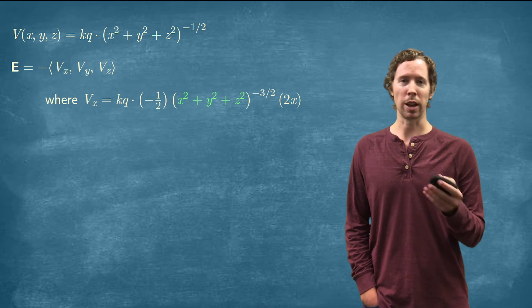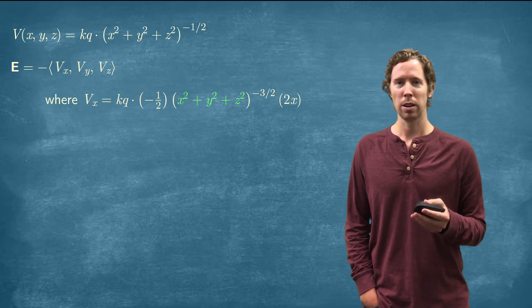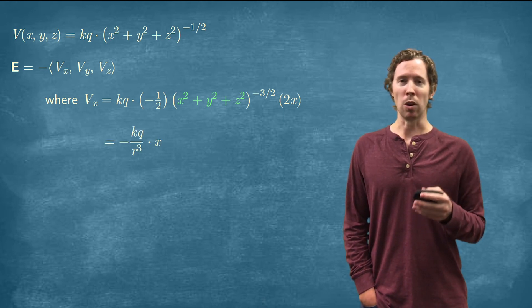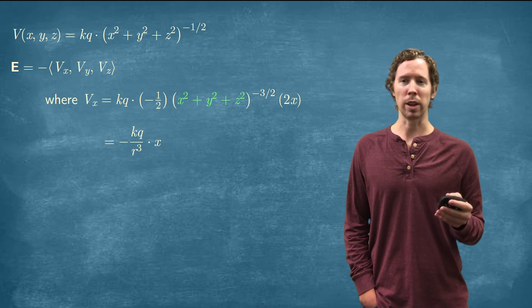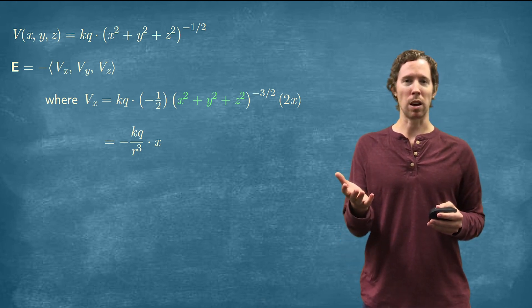R squared to the negative three halves power is just going to be R to the negative three. So we'll have an R cubed in the denominator. And then the one half times the two cancel out.